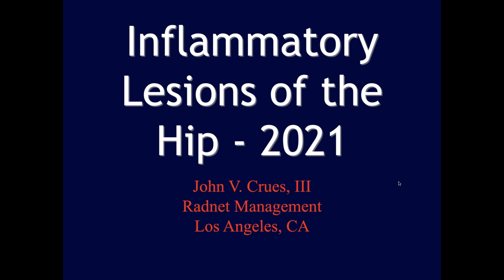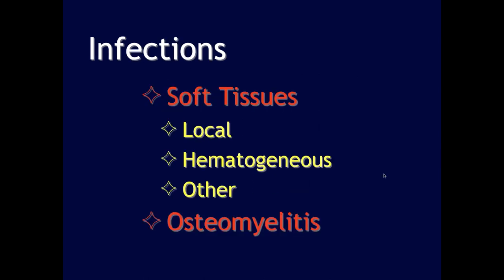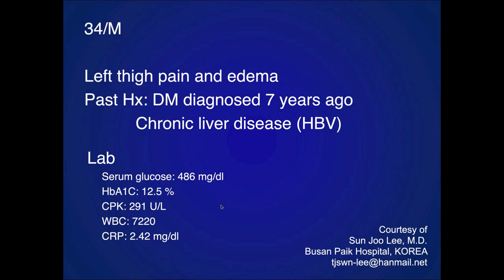Let's move on and talk about inflammatory lesions around the hip. We'll cover infections — soft tissue, local hematogenous, and osteomyelitis — and then go on to systemic inflammatory type diseases.